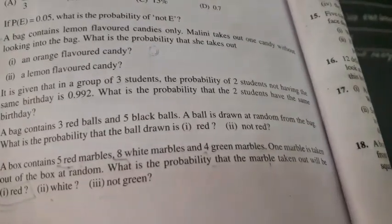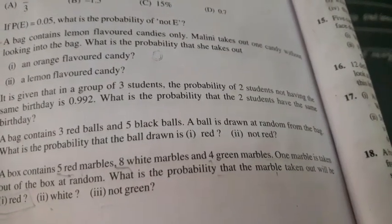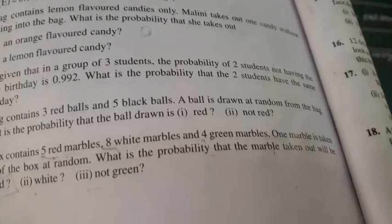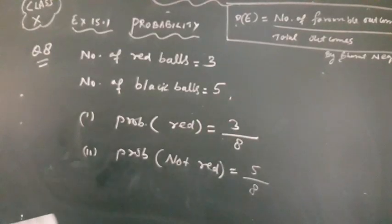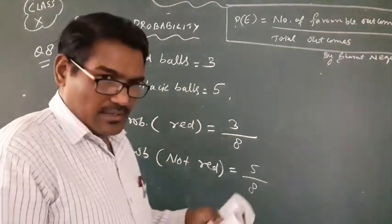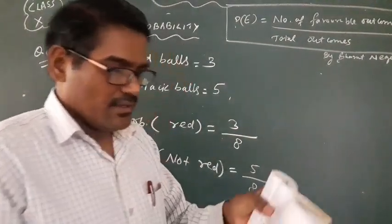And not green. So, we add this. Look at this. 8 plus 5 is 13. So, 13 by 17. That will be your answer. Clear? Now, same way we will do question number 10.